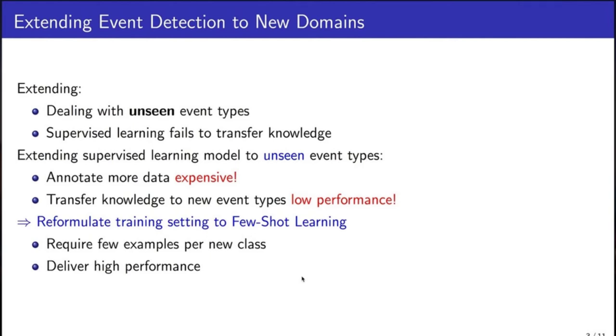unseen event types and the knowledge learned from training dataset is not well transferred. As a result, in order to apply event detection in real-world applications, one has to annotate more data for the new event type, which is really expensive, or they have to suffer from low performance.